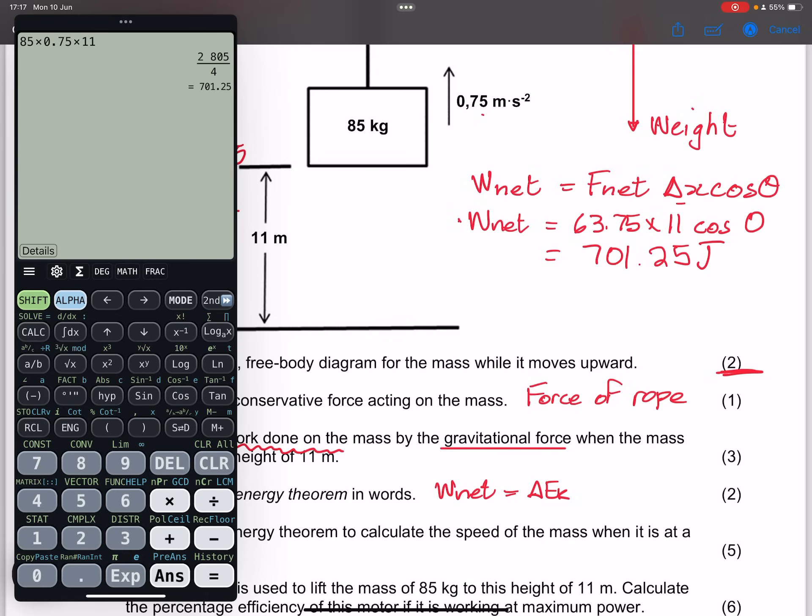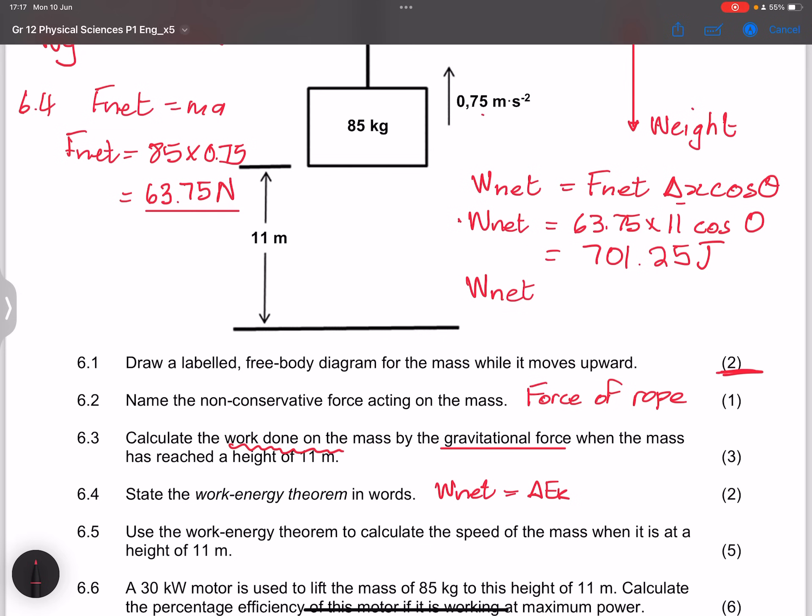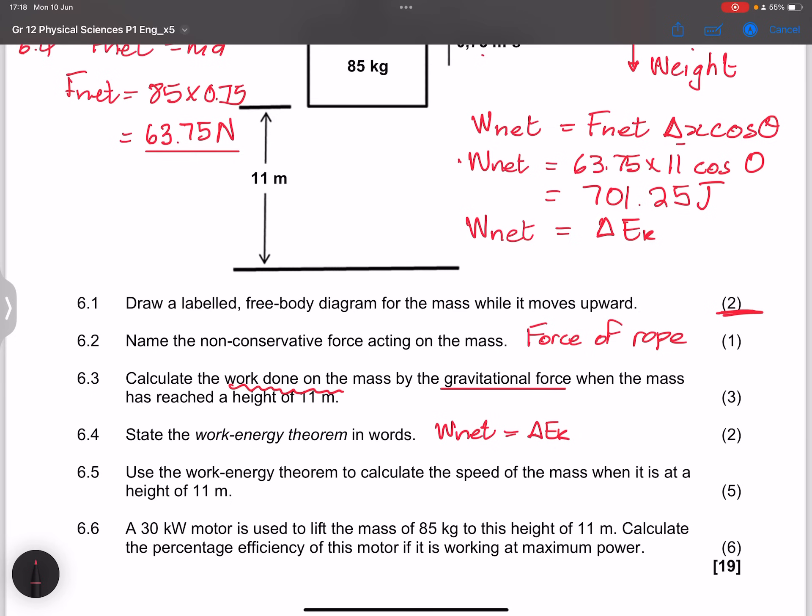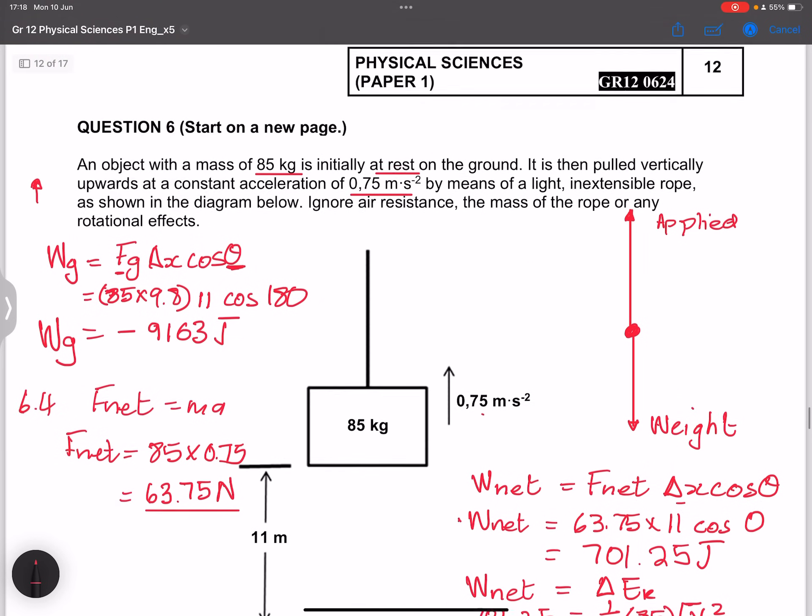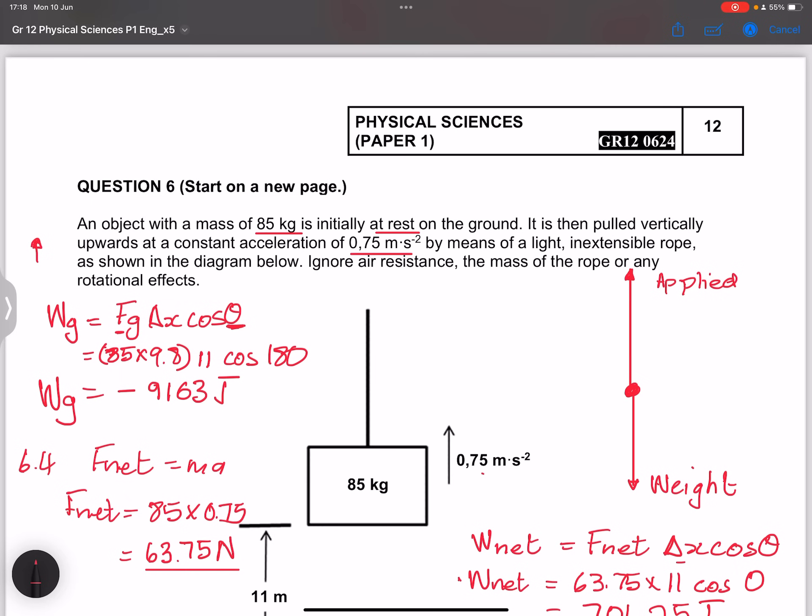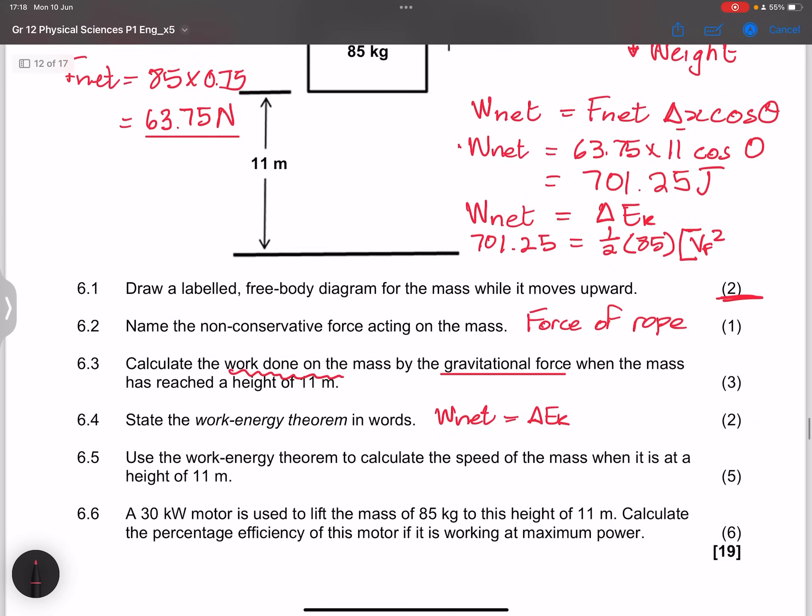That's joules. But now remember that the net work done on an object will cause a change in kinetic energy. So I've got this as 701.25, that would be half times the mass, the mass is 85, and this is times the change in velocity, so that would be final velocity squared. But remember we said it is pulled vertically from rest, so our initial velocity was zero.